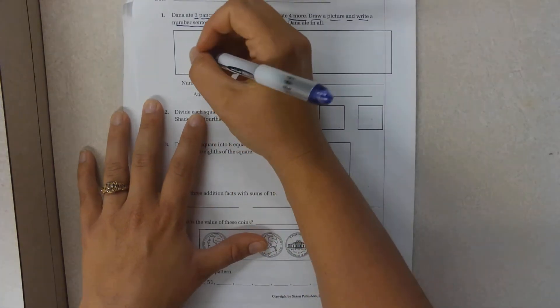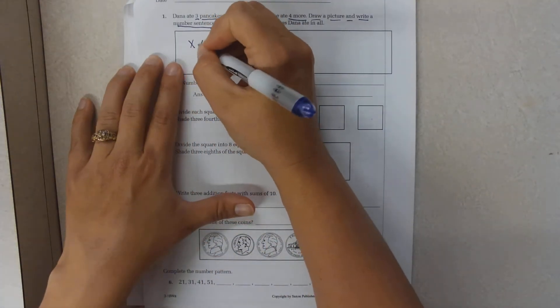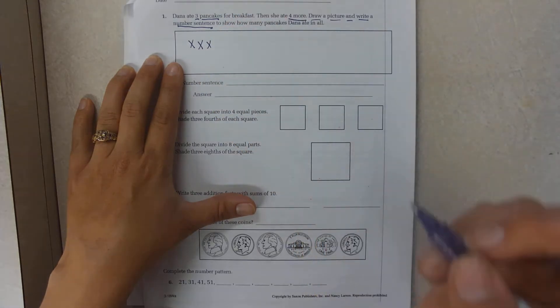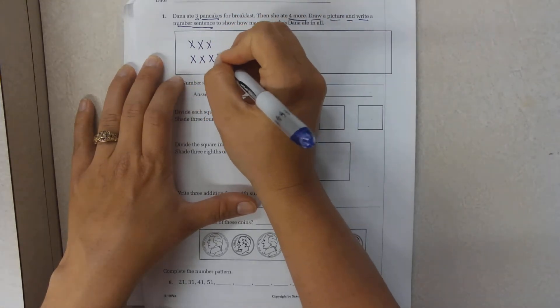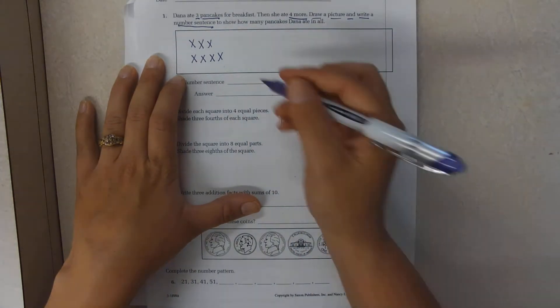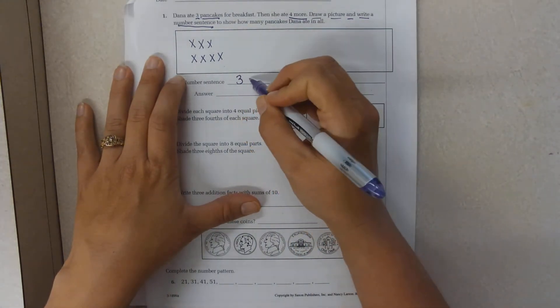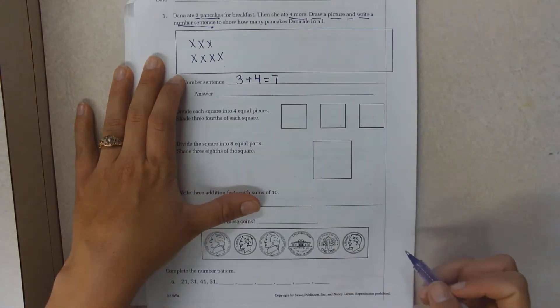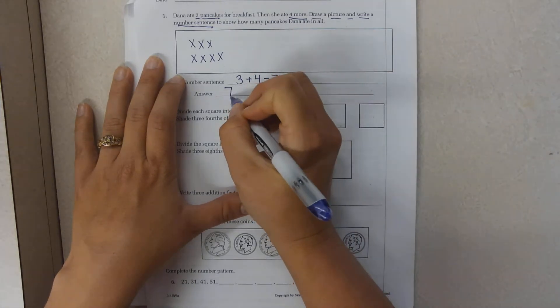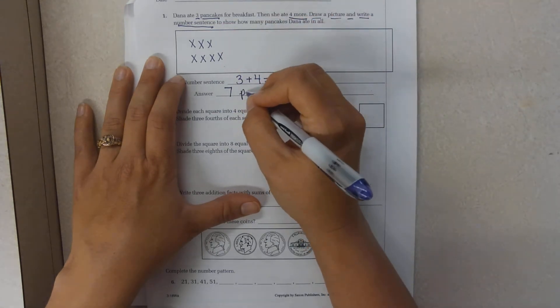Well she ate three pancakes. One, two, three. And she ate four more. One, two, three, four. Three and four equals seven. My answer is seven. Seven what? Seven pancakes.